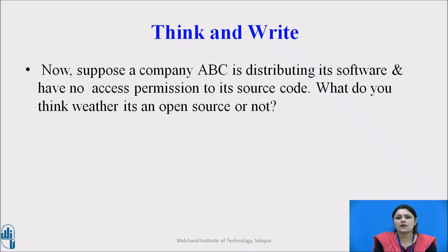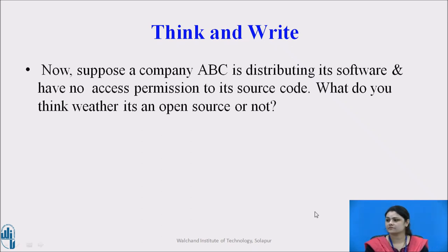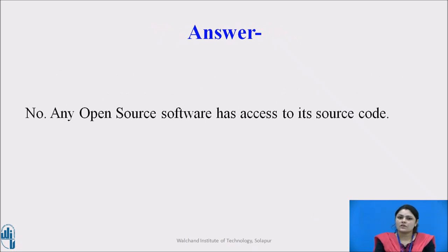Suppose a company ABC is distributing its software and has no access permission to its source code. Do you think it is open source or not? Take a pause and think on it. The answer is no. Any open source software must have access to its source code — only then is it called an open source software.